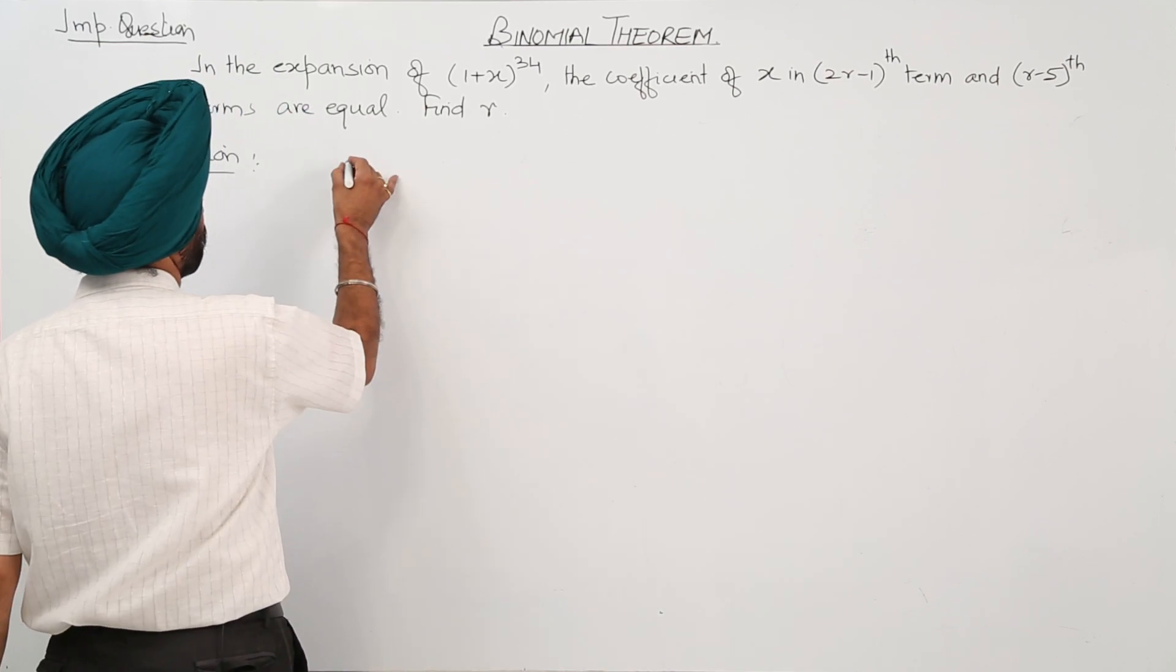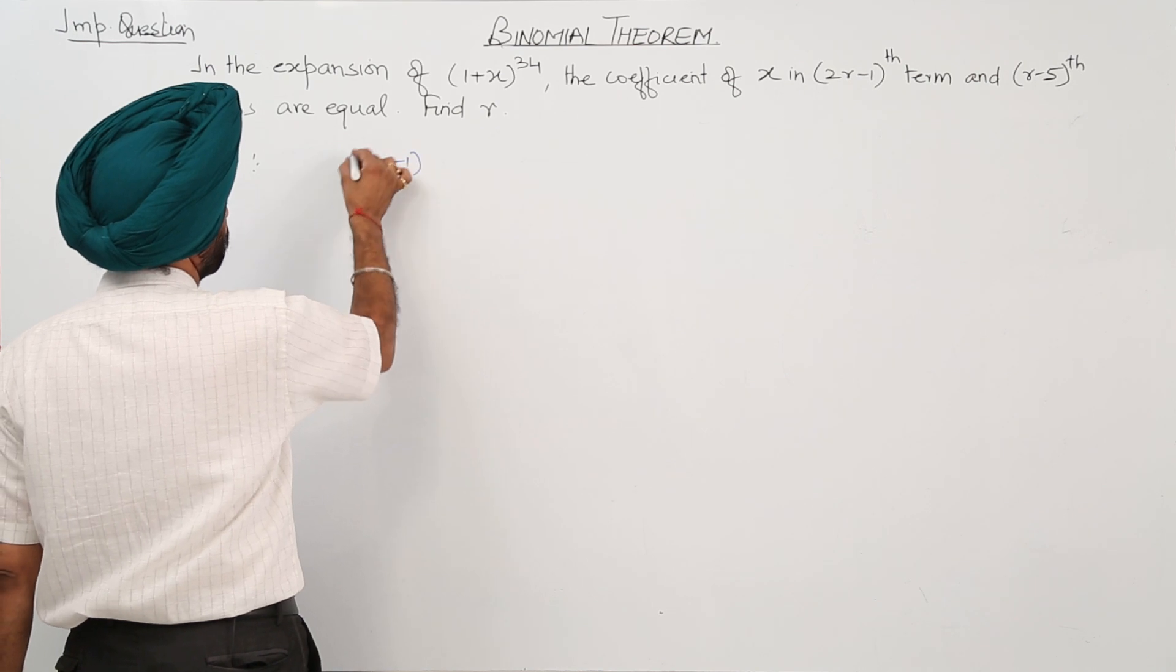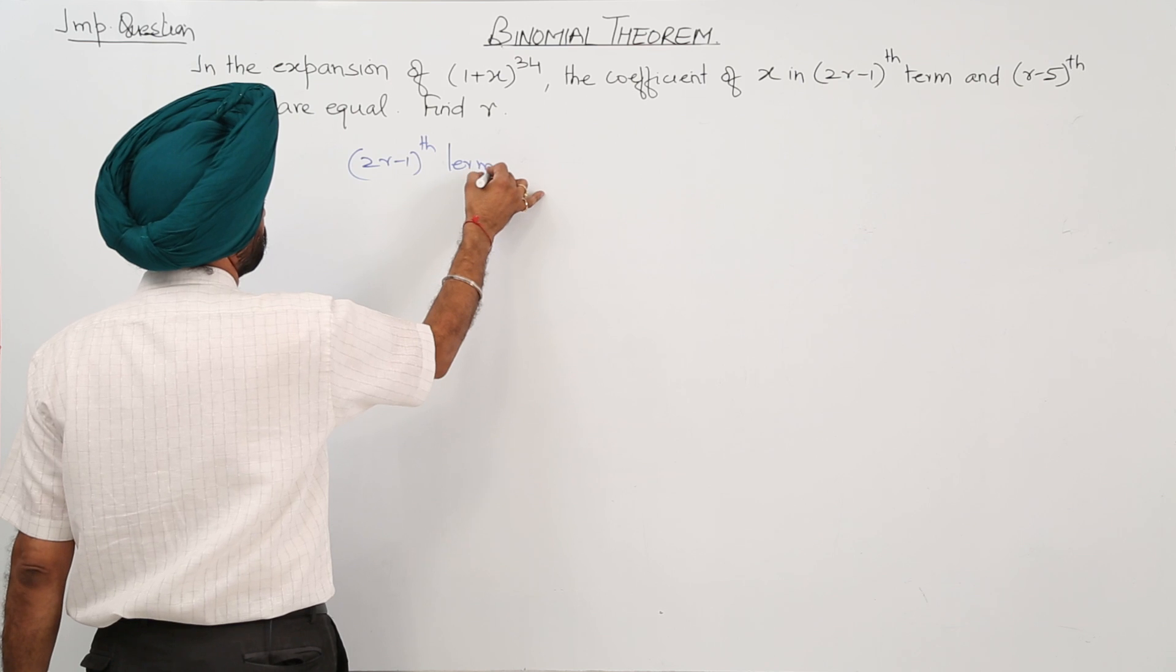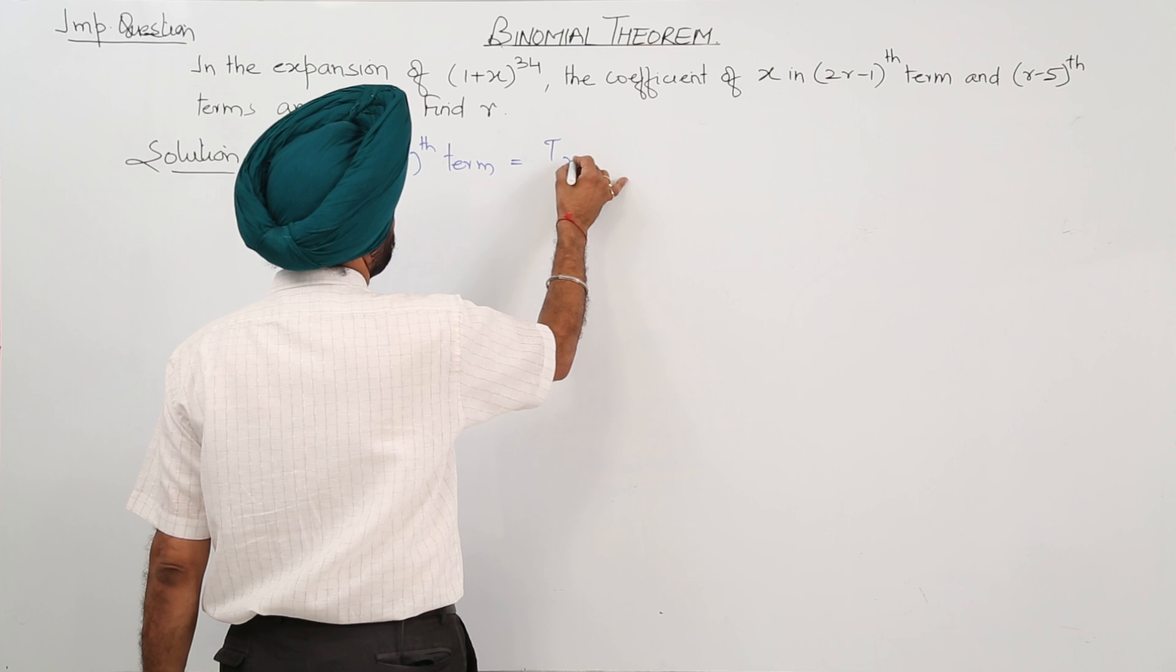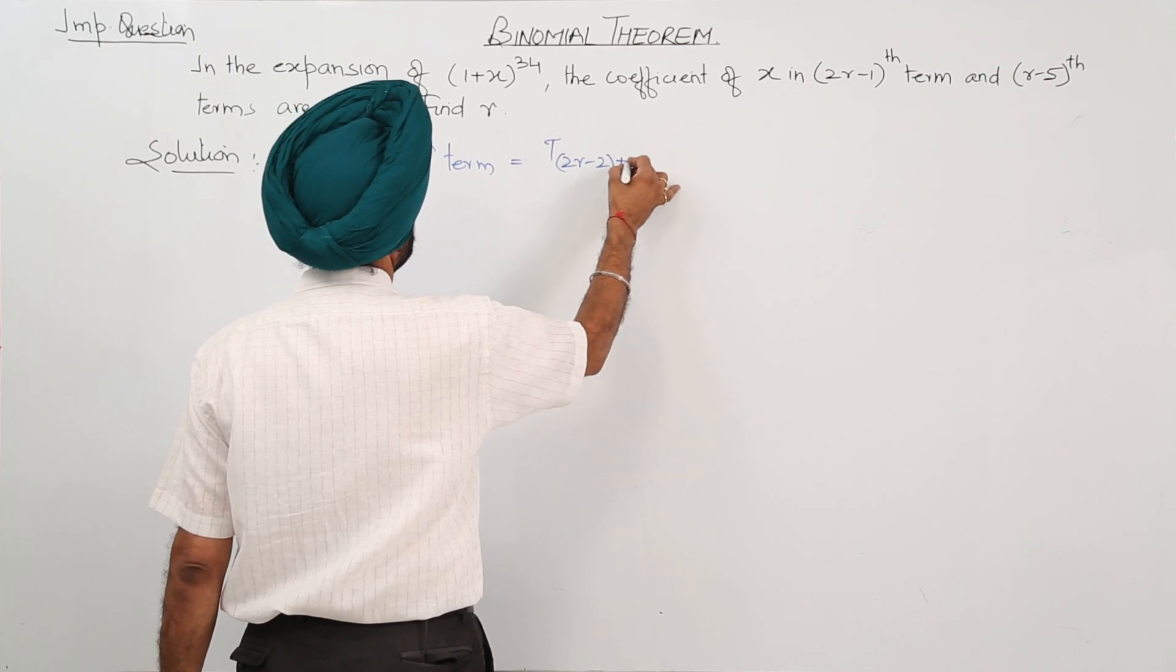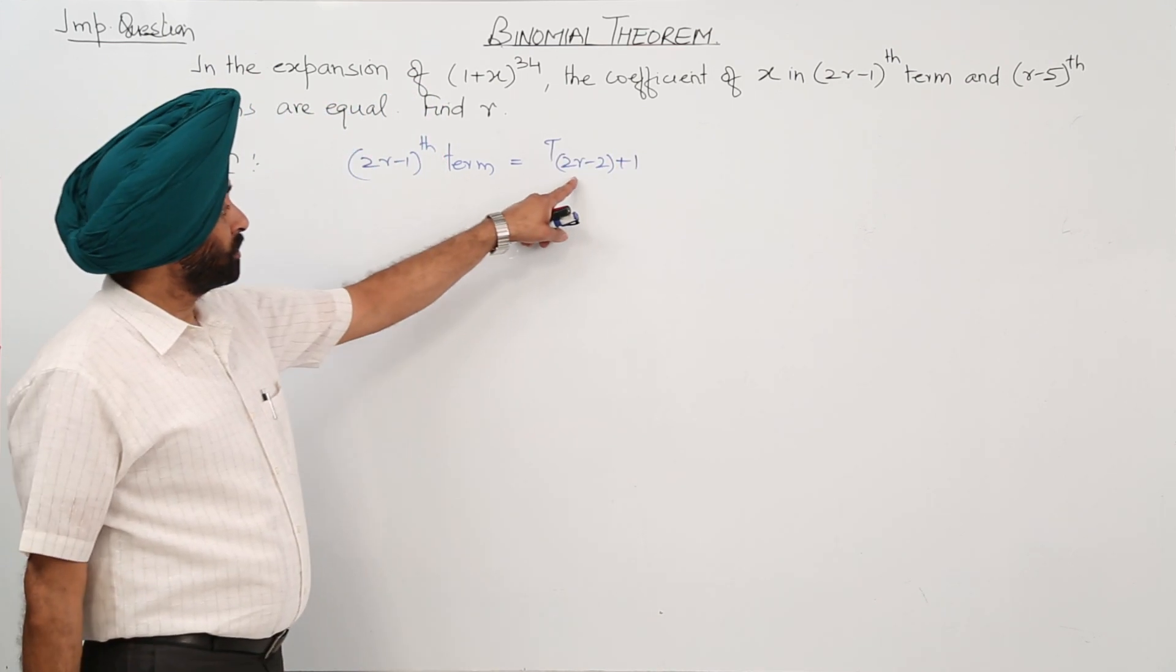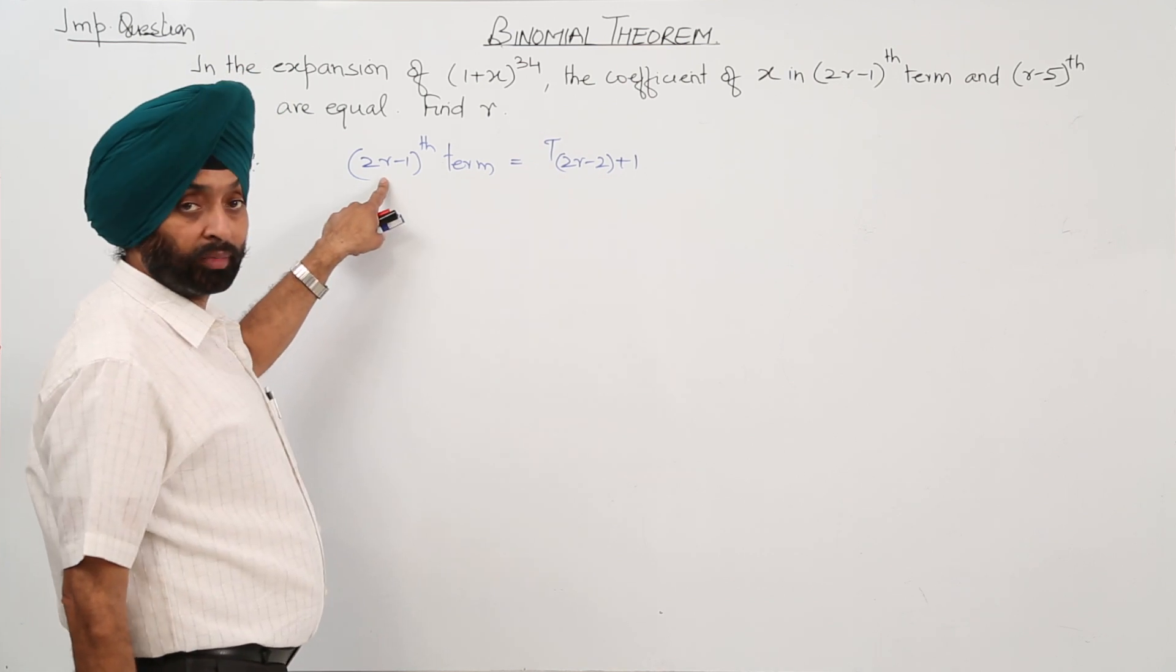The (2r-1)th term is equal to T_{2r-2+1}. When we are opening this one, you will get the (2r-1)th term.